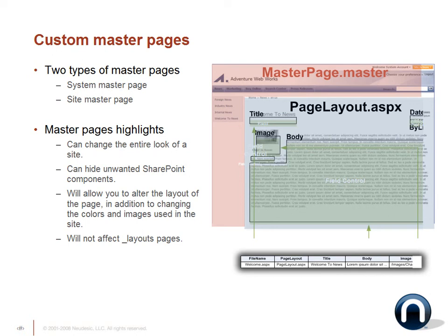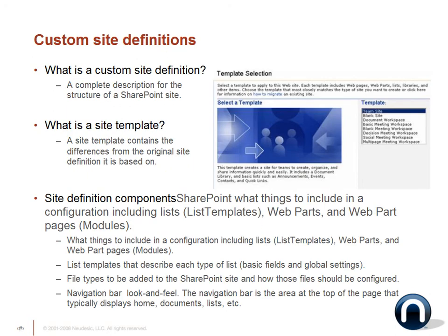The master page also allows you to hide unwanted SharePoint components. A common problem is when customers actually delete components — never, never delete them. What you want to do is hide the unwanted components, because a component may be needed somewhere else. If you delete it, you're going to end up with errors on your SharePoint site. This also allows you to alter the layout of the page in addition to changing colors and images. The page layout is where you'll have all your web part zones and field controls — you have your master page.master and then the page layout.aspx overlapping with it.